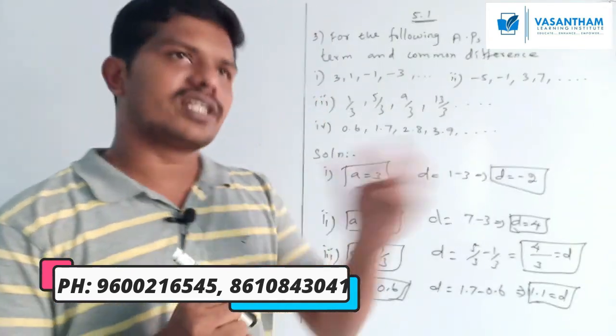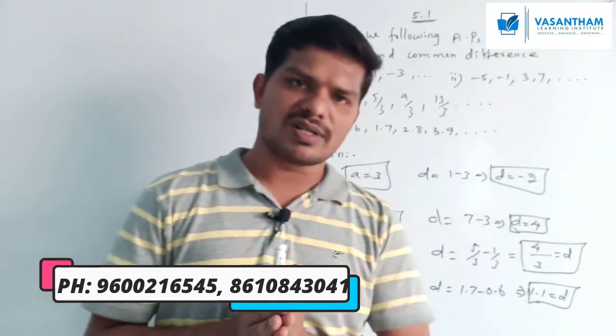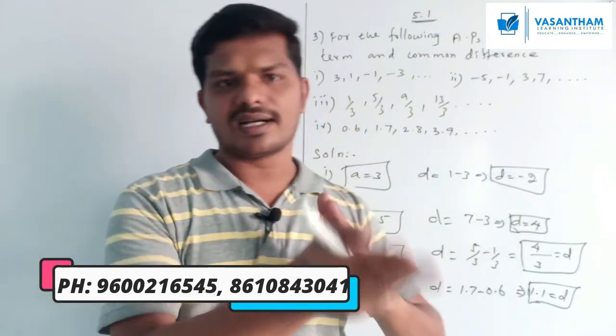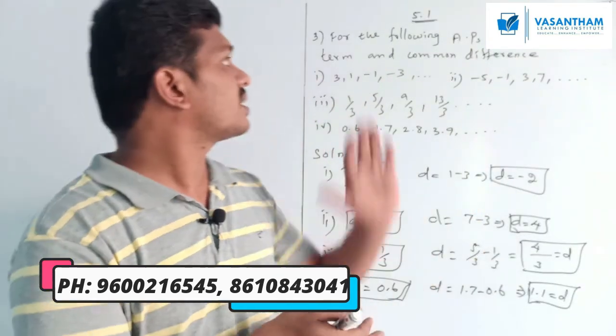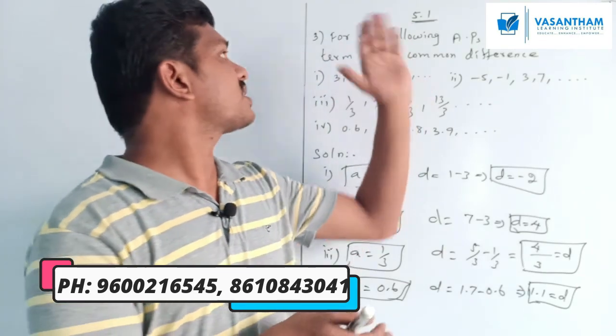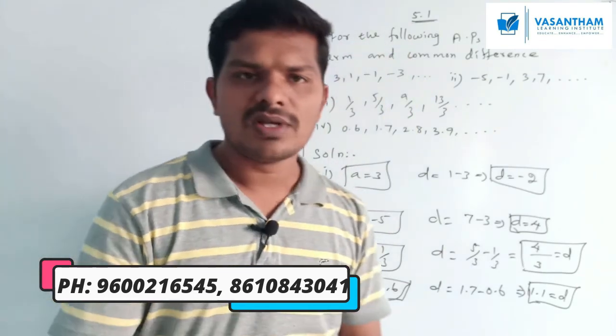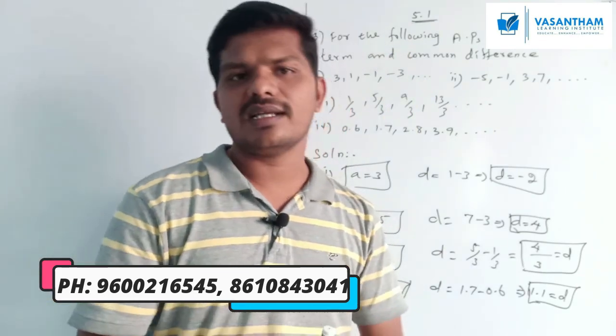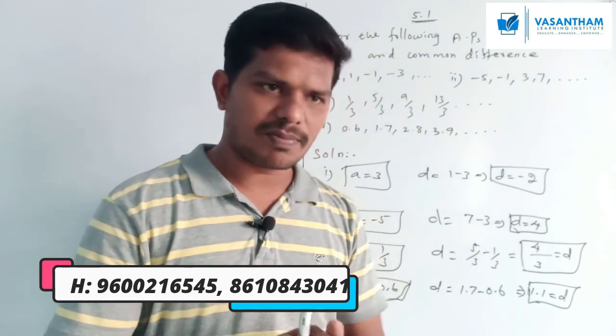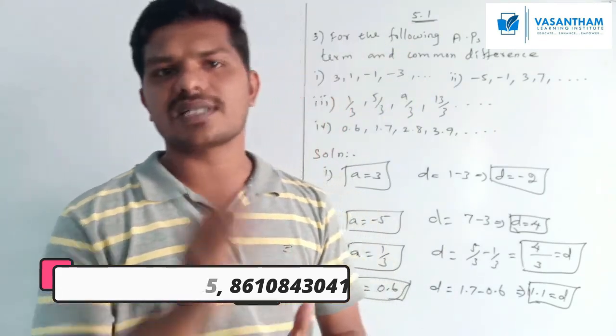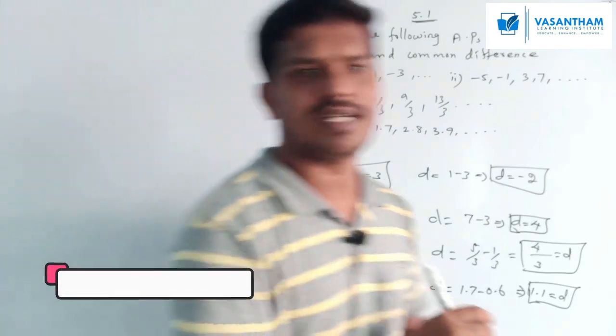So that covers the problems for finding common difference. There are some additional AP problems remaining. For the next problem with terms 3.5 and 5.9, find the AP — that is for the next video. Thank you.